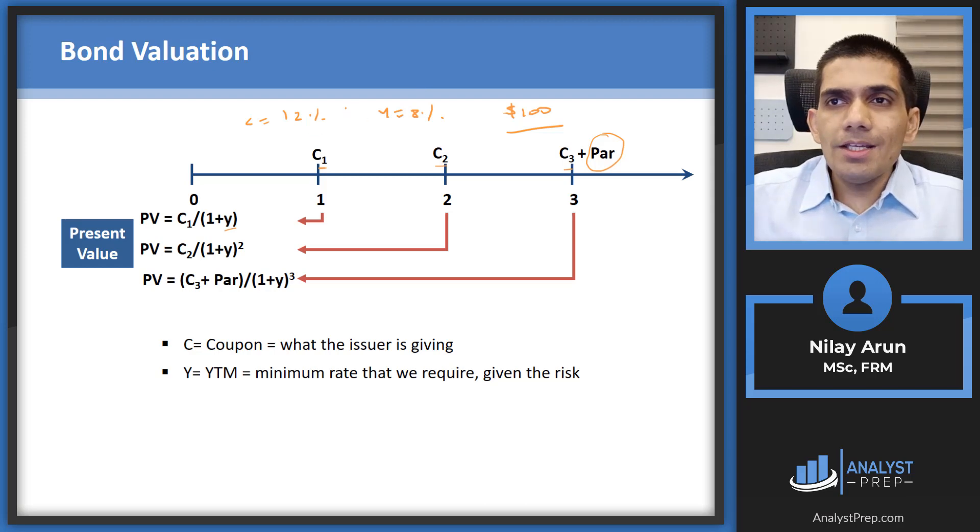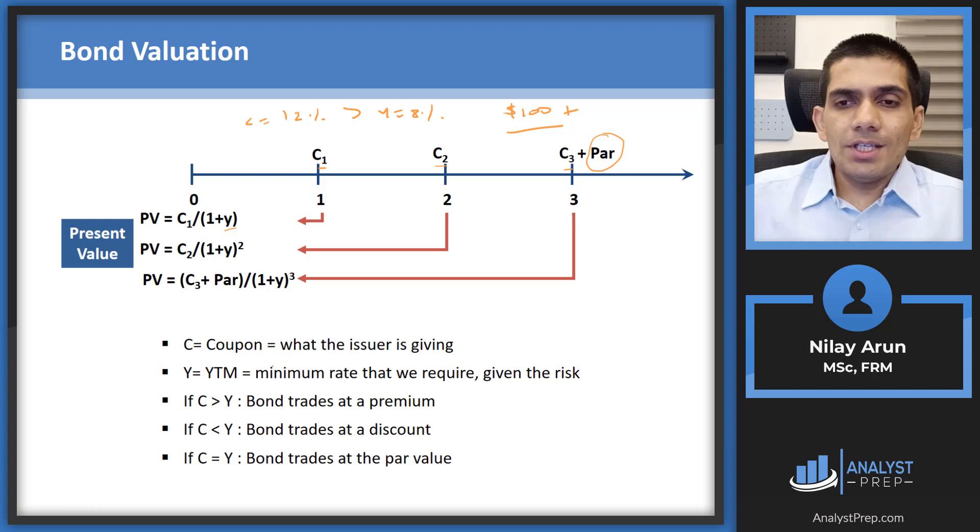So if the coupon is more than the yield, which is the case here, then the bond will trade at a premium, which means the price will be 100 plus some value because it is giving you a higher rate of return than what you demanded. So if C is more than Y, the bond is going to trade at a premium.